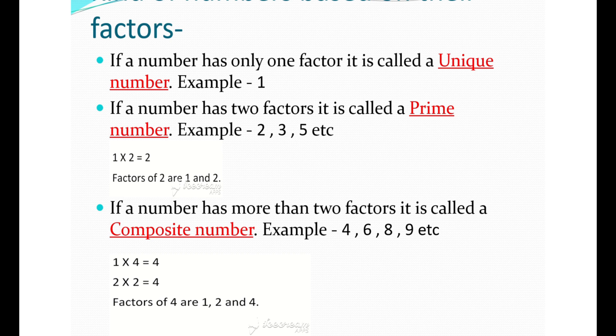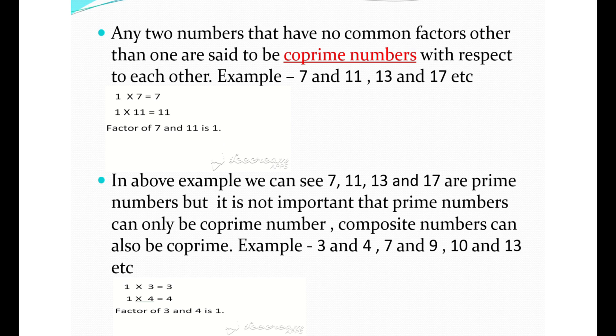We can classify numbers based on their factors. If a number has only one factor, it is called a unique number. One is the only unique number. If a number has two factors, it is called a prime number, for example 2, 3, 5, 7, 11, etc. If a number has more than two factors, it is called a composite number, for example 4, 6, 8, etc.